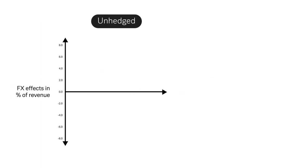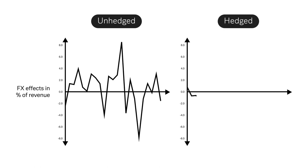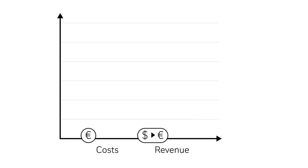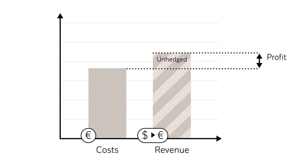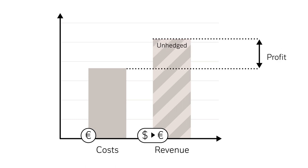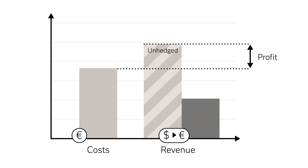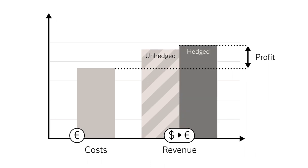Thomas's company uses FX hedges to limit their exposure to fluctuations in exchange rates. For instance, Thomas's company executes an FX hedge to align their revenue and costs. On one order, they will receive US dollars, but costs are in euros. The hedge will protect their profits from adverse FX moves.